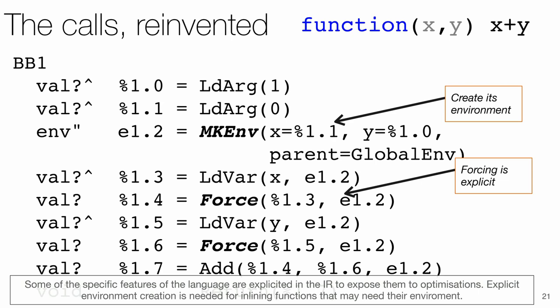All accesses to it are then also explicit, as is forcing when the values are promises. This allows us to track where environments are used, where they leak from the function, where arbitrary effects can occur, and sometimes show that the function doesn't need an environment, and it's safe to not create it.